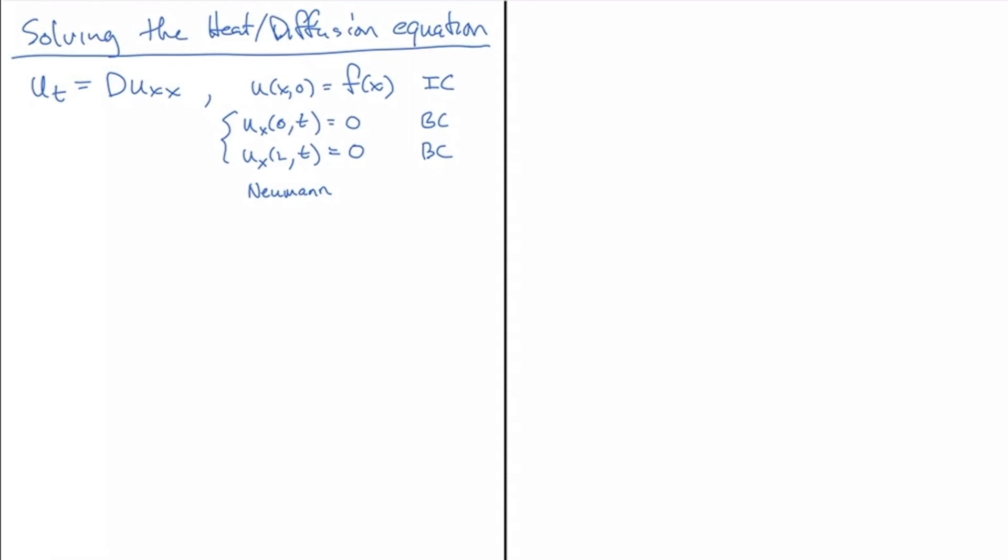Recall that we were interested in using the solutions of u_xx equal lambda u as our eigenvectors, and we found that for lambda equals zero, we had u(x) equal to bx plus a_naught.